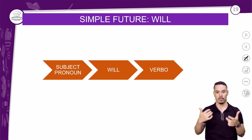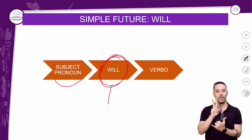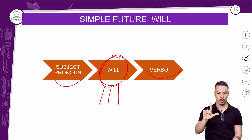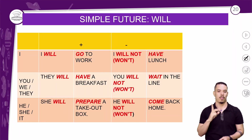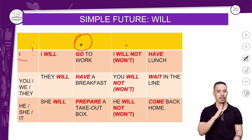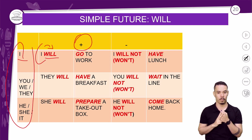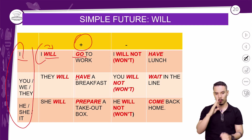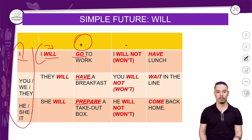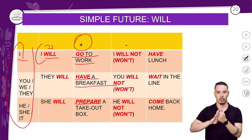Now let's review the structure of the future with 'will.' You need: subject + will + main verb (+ complement). For the affirmative: I will go to work, they will have breakfast, she will prepare a take-out box. For the negative: subject + will not / won't + main verb. 'Will not' and 'won't' are the same — you choose between them. Your main verb always stays in base form.